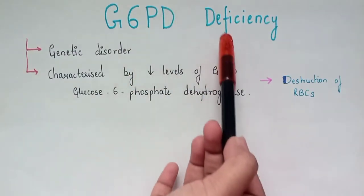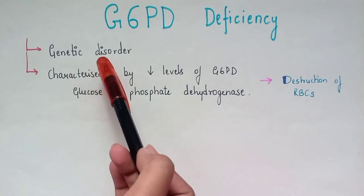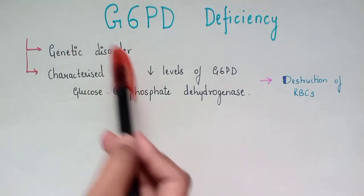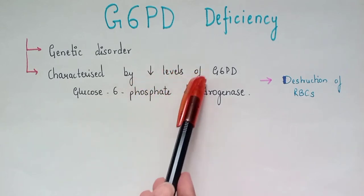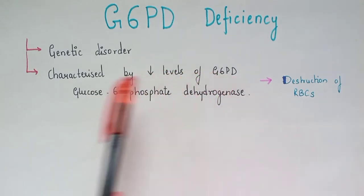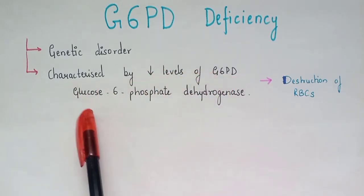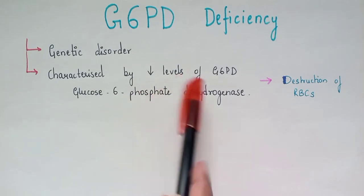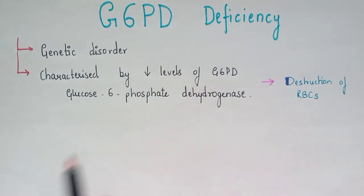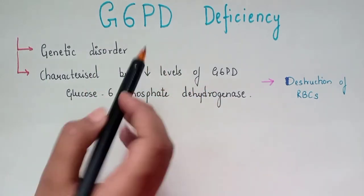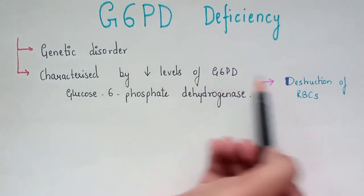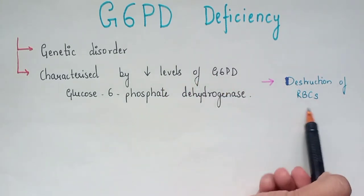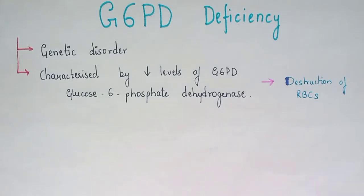G6PD deficiency is a genetic disorder characterized by decreased levels of G6PD, which is glucose-6-phosphate dehydrogenase. The decreased levels of G6PD lead to the destruction of RBCs in our body.